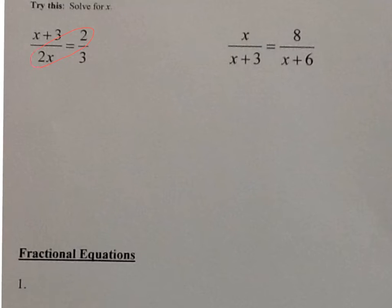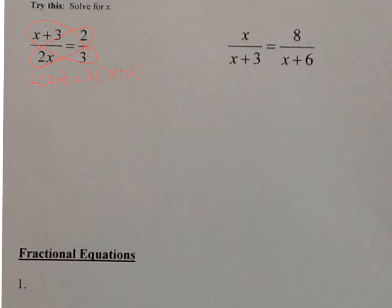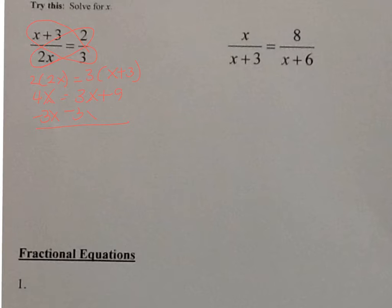So I have 2x times 2 is equal to 3 times x plus 3, and we'll distribute. So I get 4x equals 3x plus 9, and minus 3x, I get 4x minus 3x is 1x equals 9.